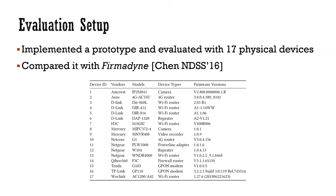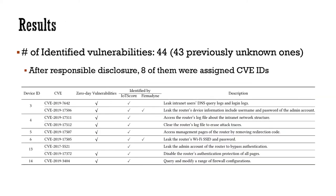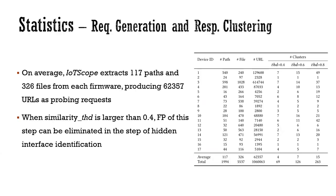We compared this tool with Firmadyne. To our surprise, it identified 44 vulnerabilities, 43 of them previously unknown. We received 8 CVE IDs after responsible disclosure. In terms of statistics of requests and responses, on average IoTScope extracts 117 paths and 326 files from each firmware, producing 62,357 URLs as probing requests.